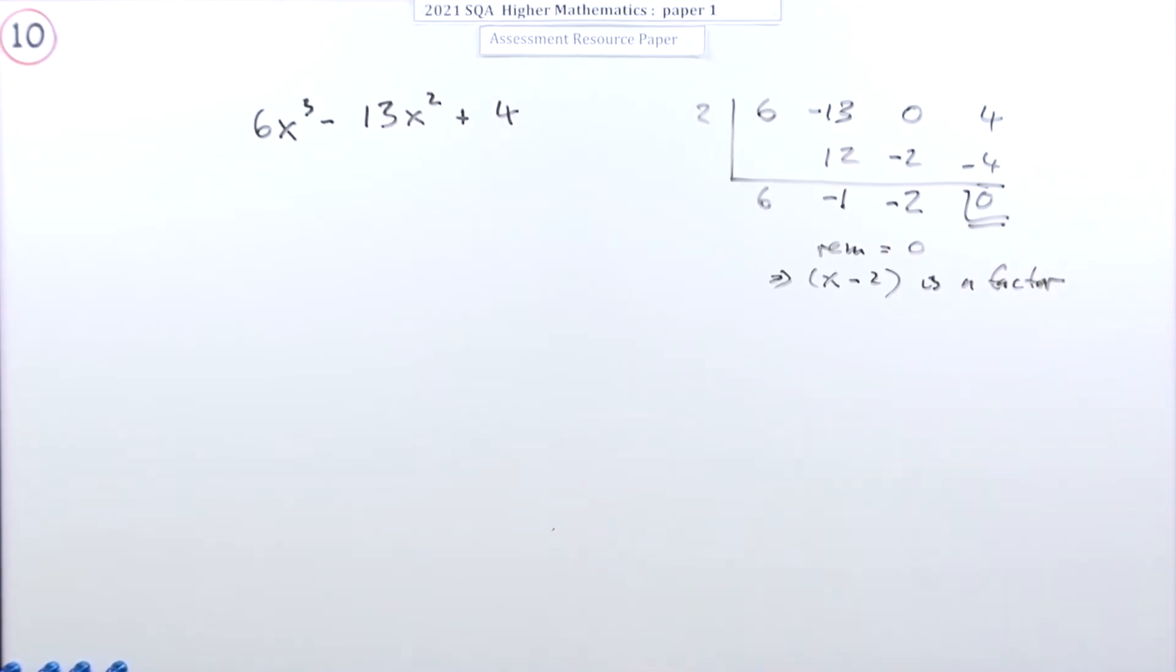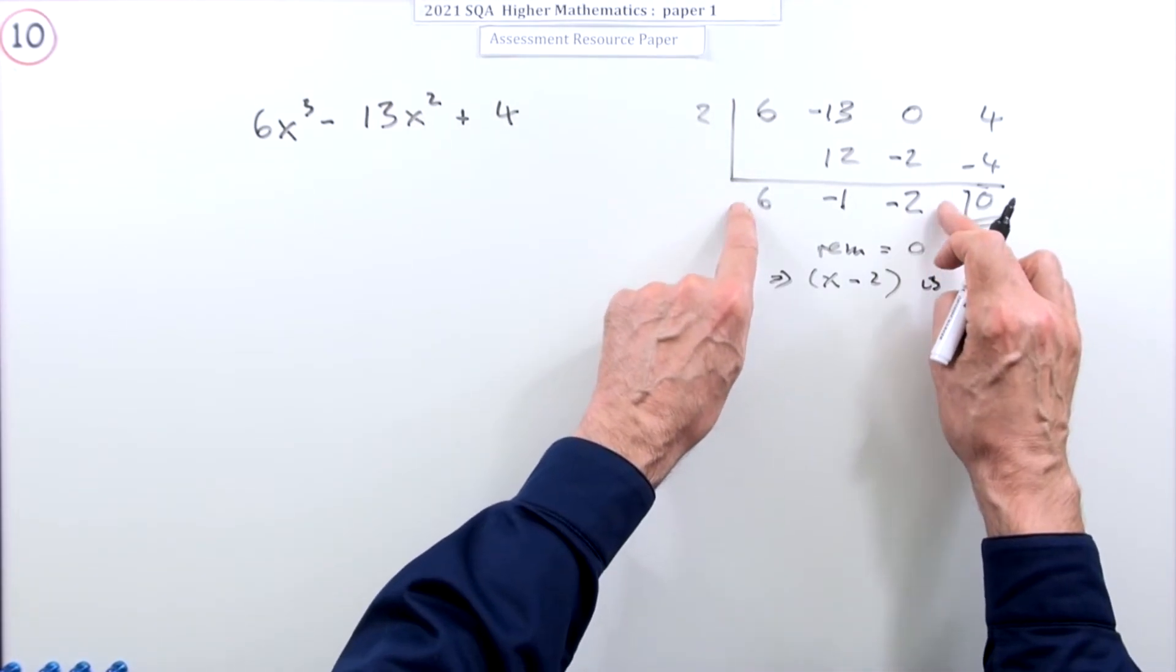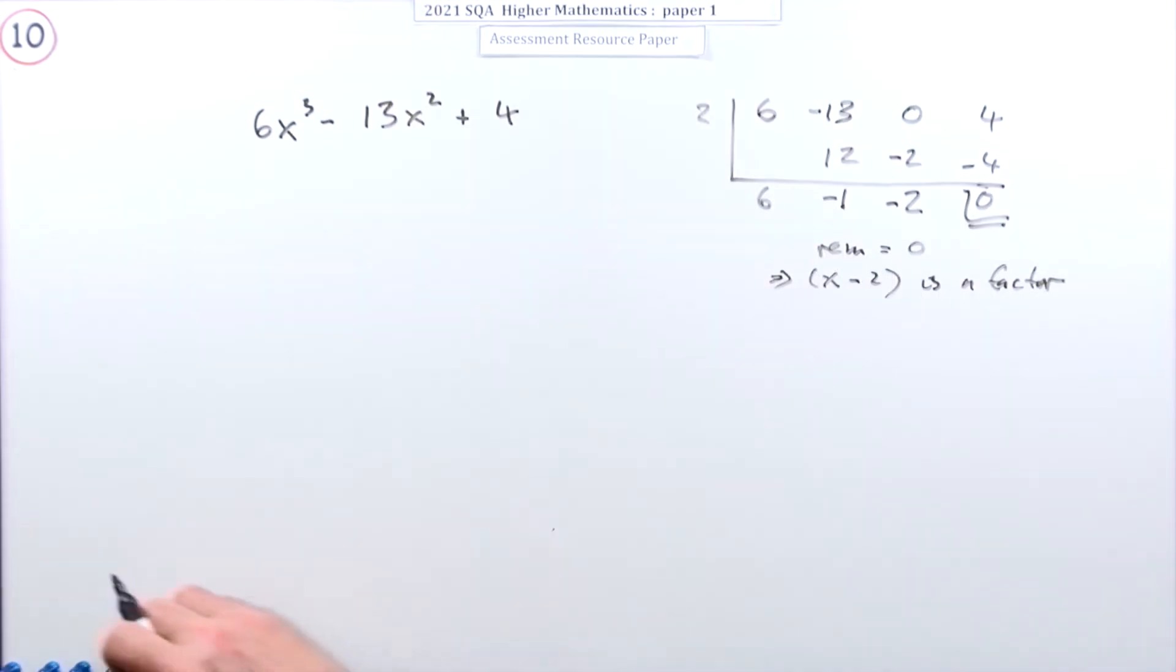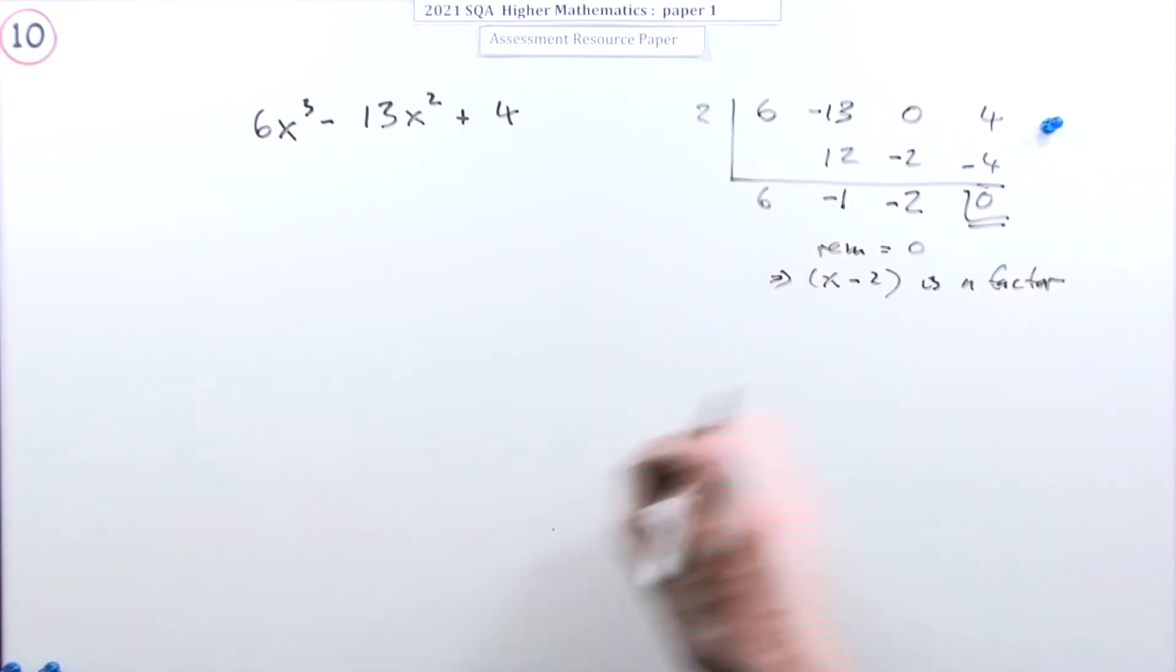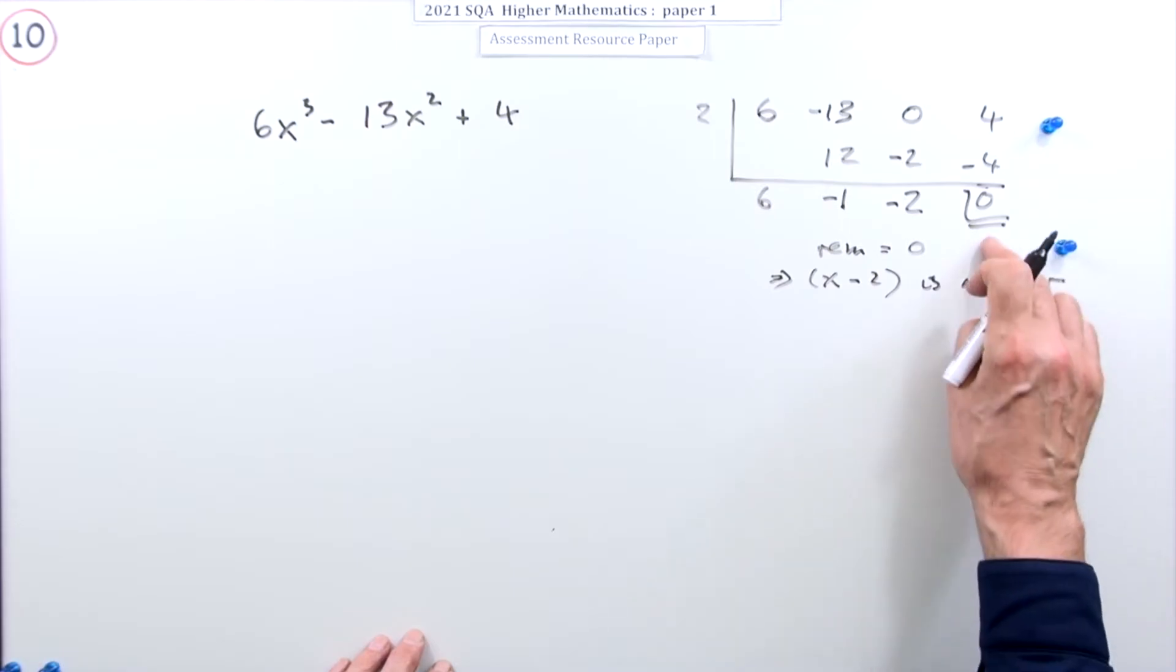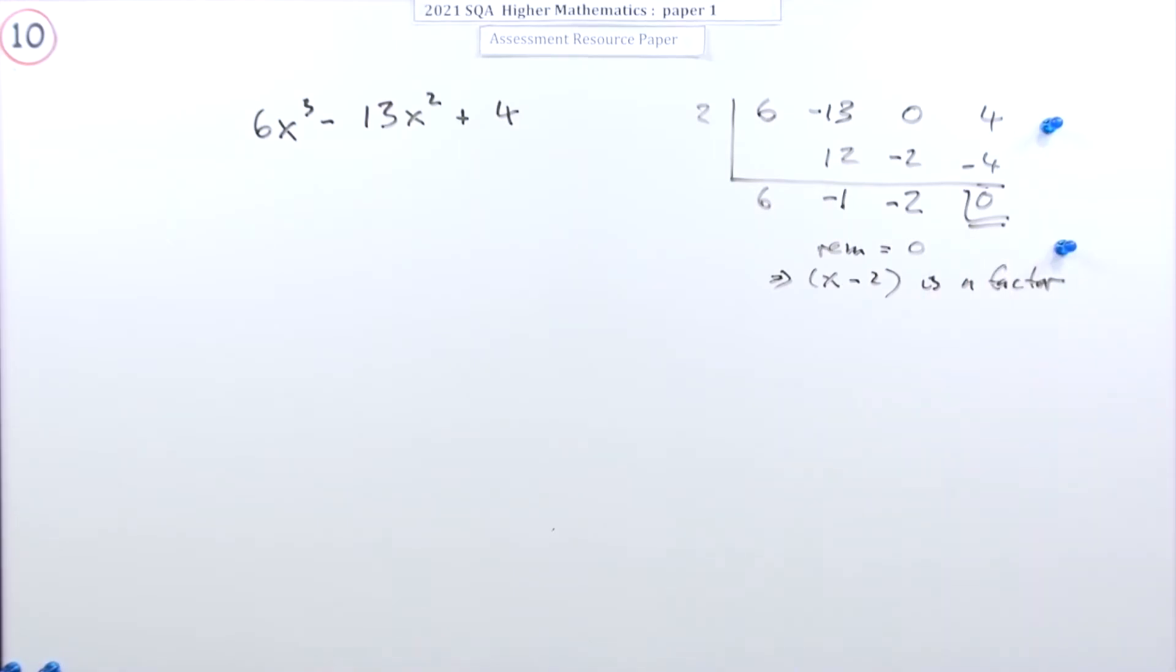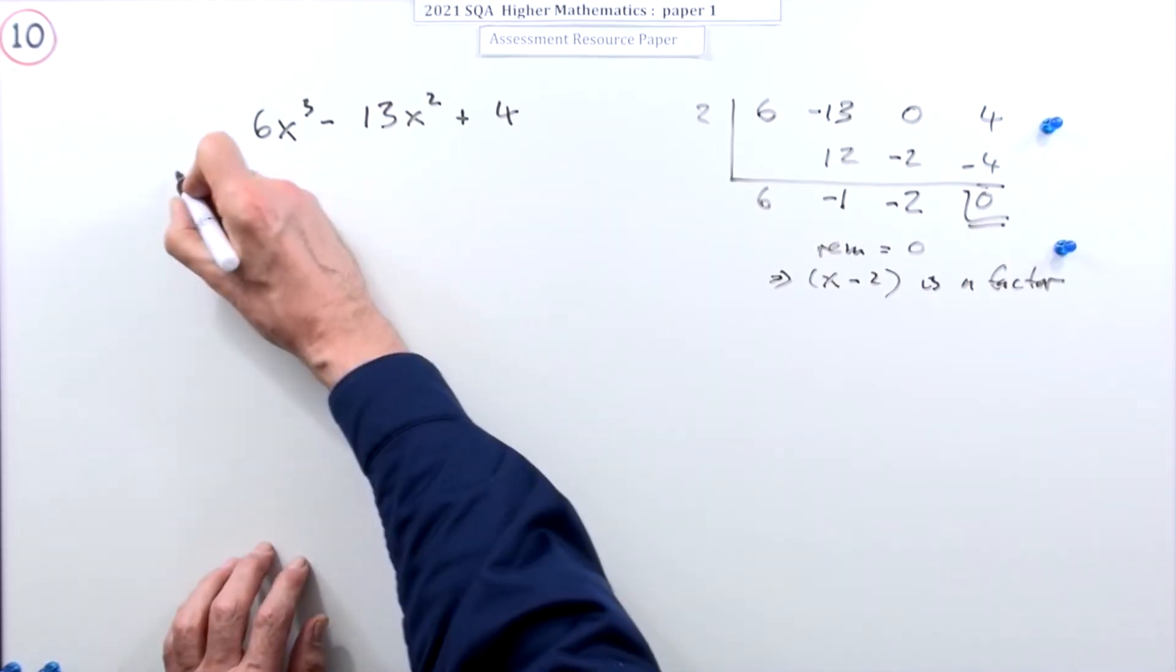That's the first bit, and of course the useful thing here is that's the other factor. Now there was two marks there already. There was one for using the synthetic division table properly, so let's remember to put that zero in. There was another mark for finishing it off and getting that linear factor.